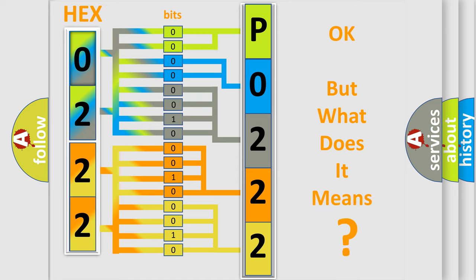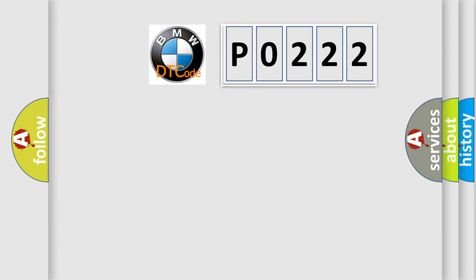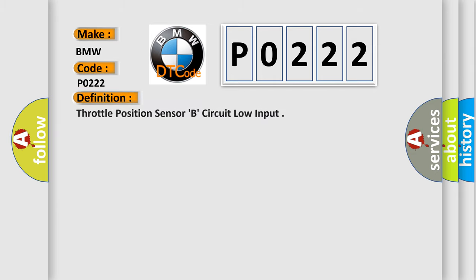We now know in what way the diagnostic tool translates the received information into a more comprehensible format. The number itself does not make sense to us if we cannot assign information about what it actually expresses. So, what does the diagnostic trouble code P0222 interpret specifically for BMW car manufacturers? The basic definition is: Throttle Position Sensor B, circuit low input.